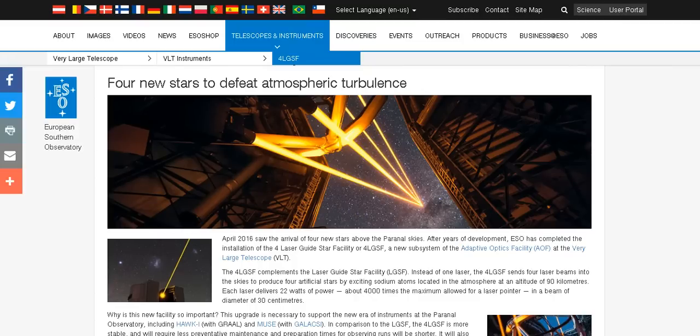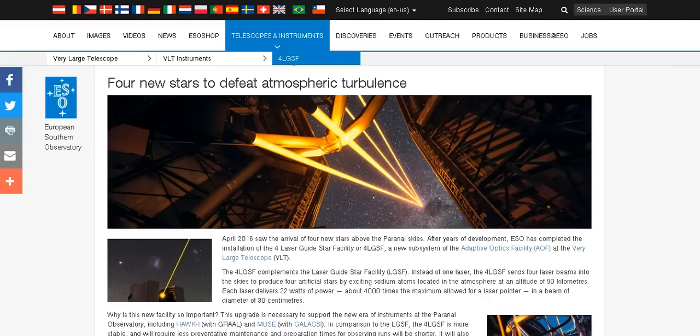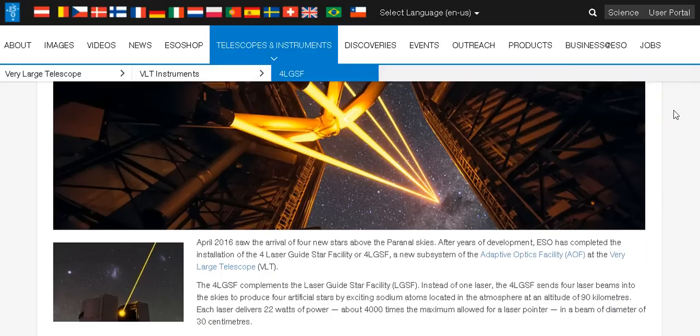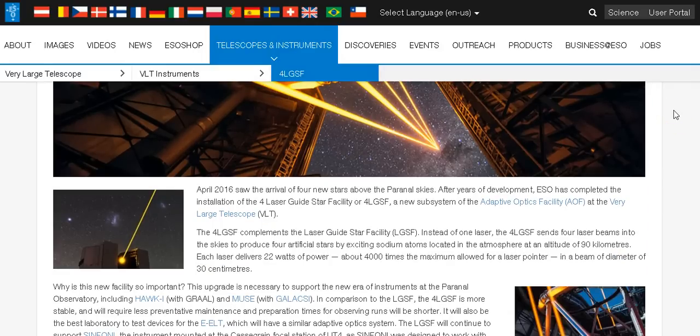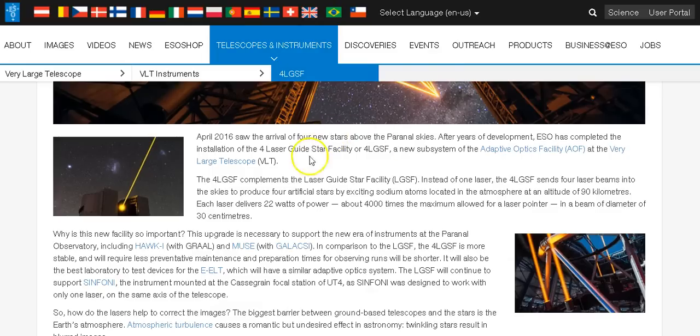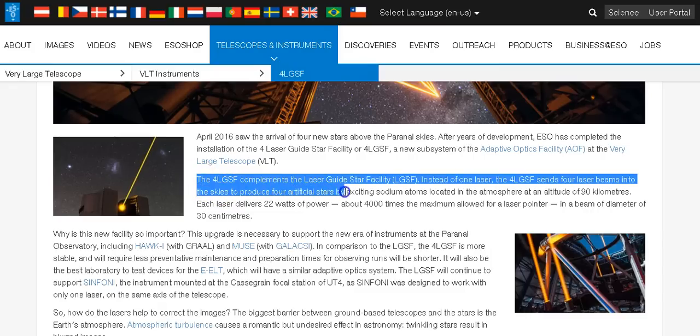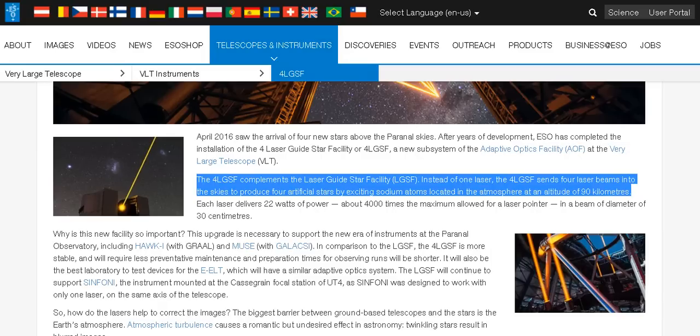You can see it here as clear as day. I don't want you Christian people and you biblical people to go crazy but according to the European Southern Observatory the 4LGSF complements the laser guide star facility. Instead of one laser the 4LGSF sends four laser beams into the skies to produce four artificial stars by exciting sodium atoms located in the atmosphere.